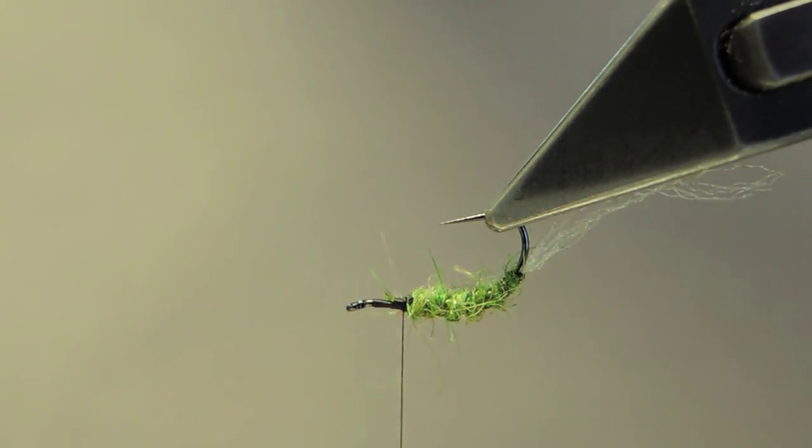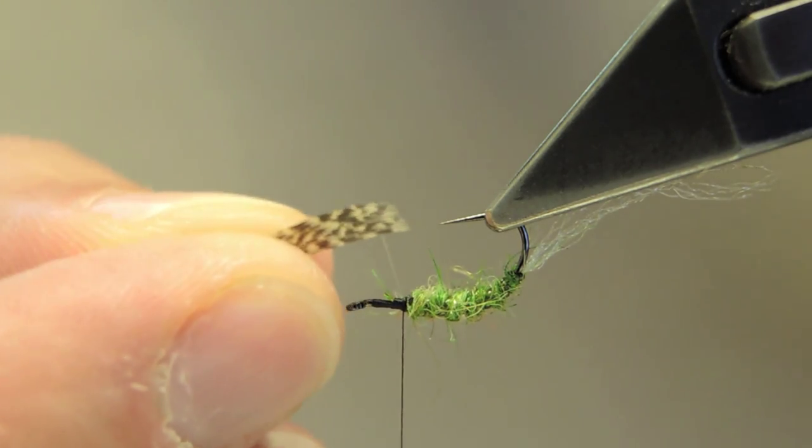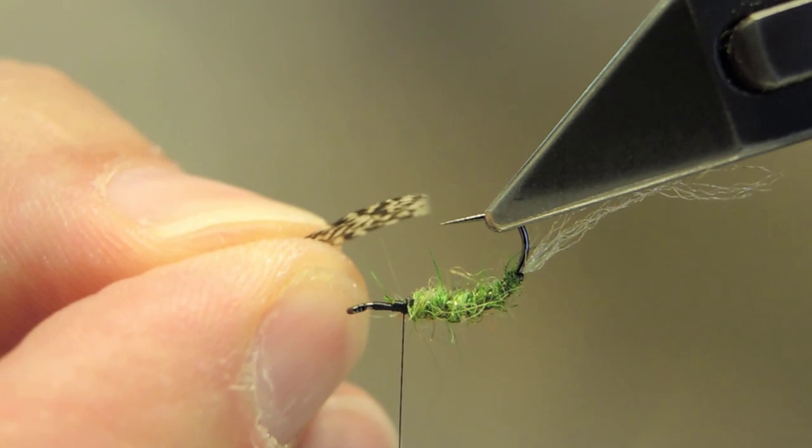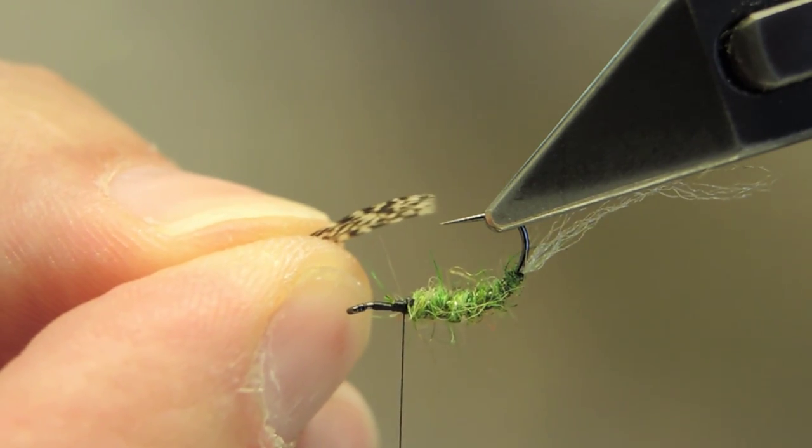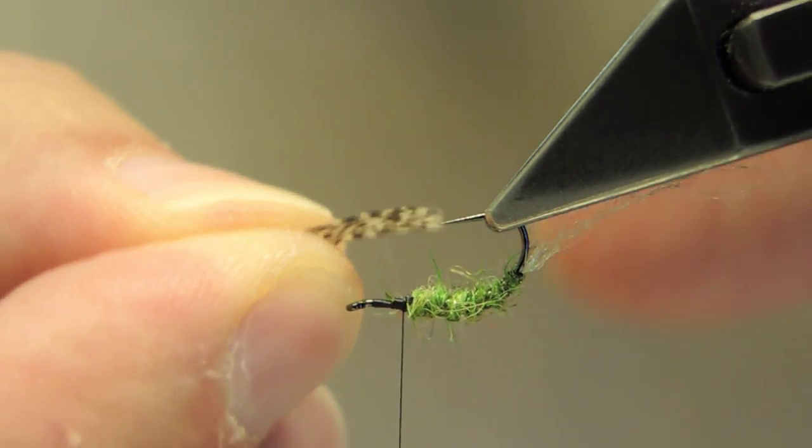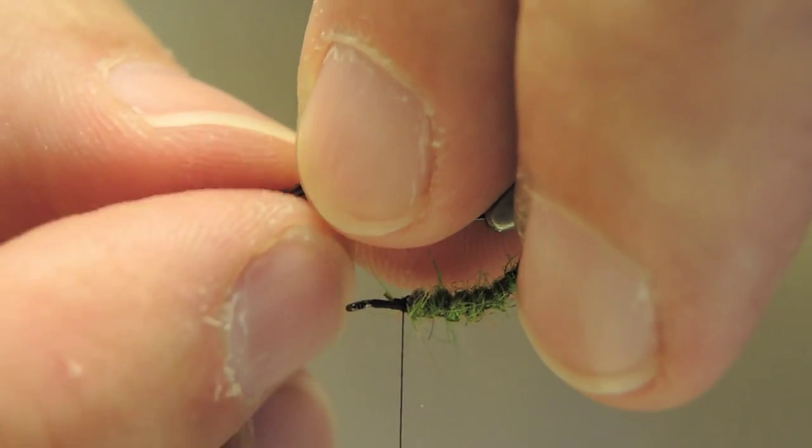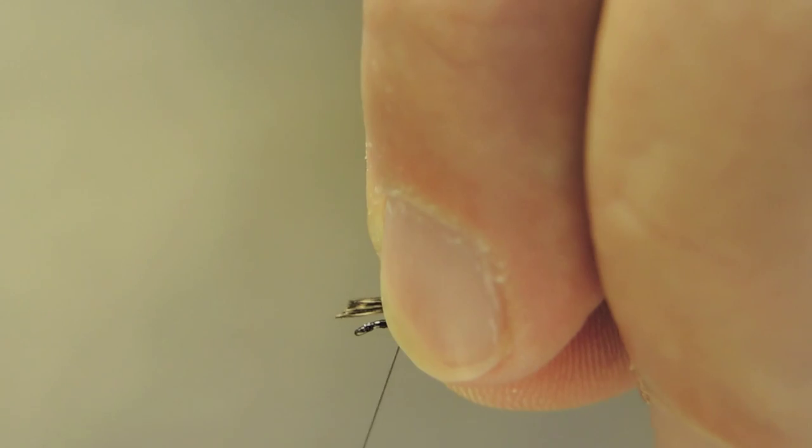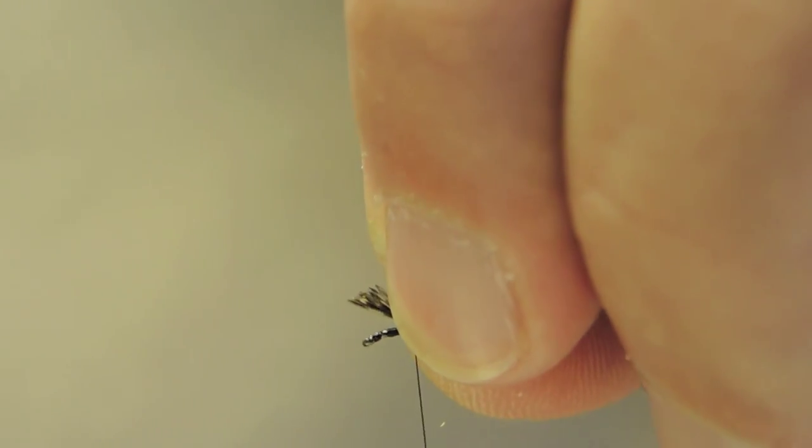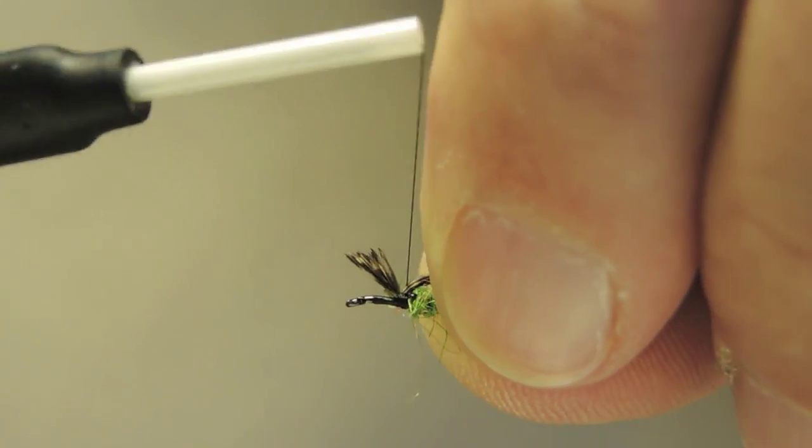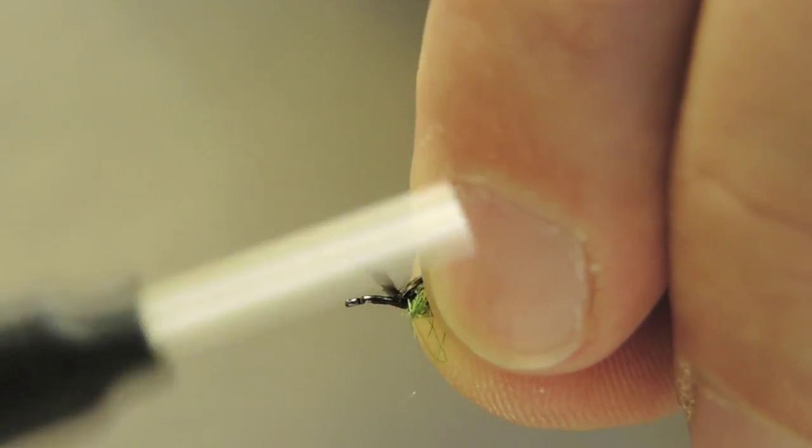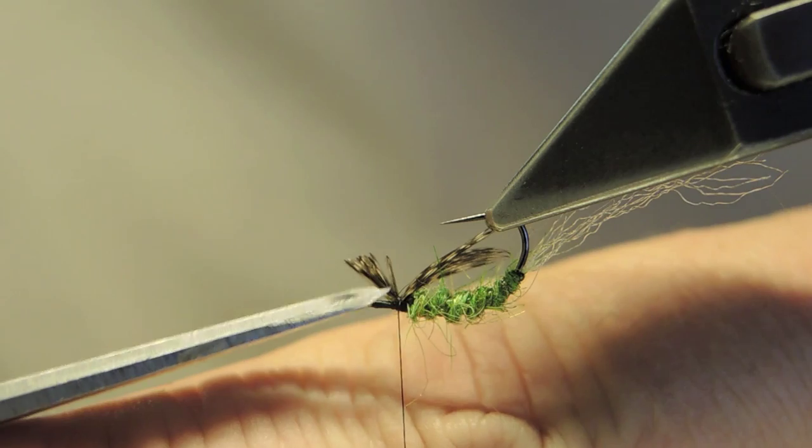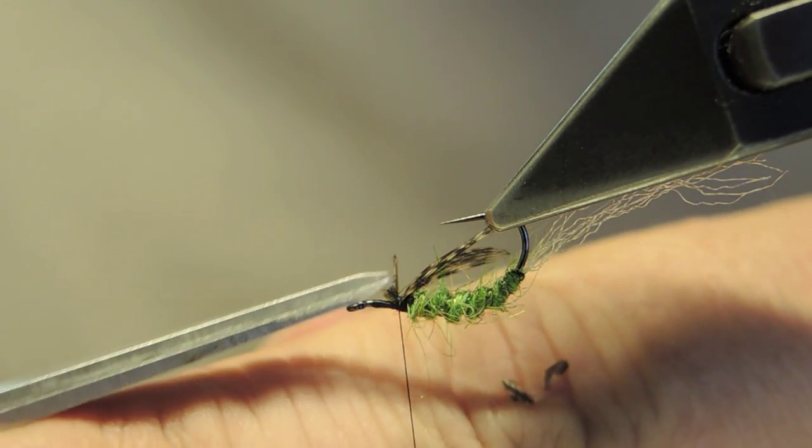The legs, a few barbs of a dark mottled feather. I'm using Whiting Farms cocktail hen saddle barbs. Brown partridge would be a good alternative. And trim away the waste.